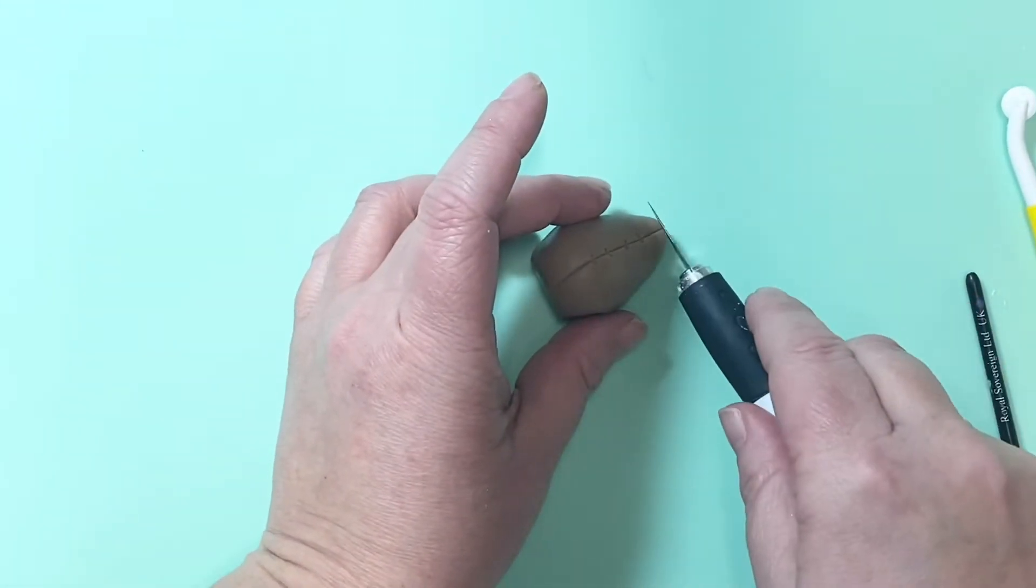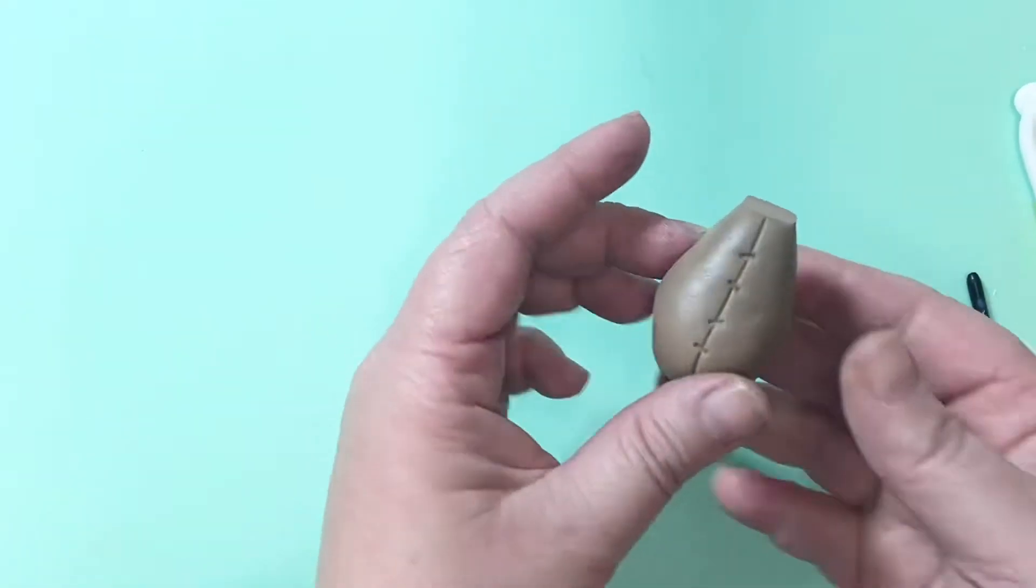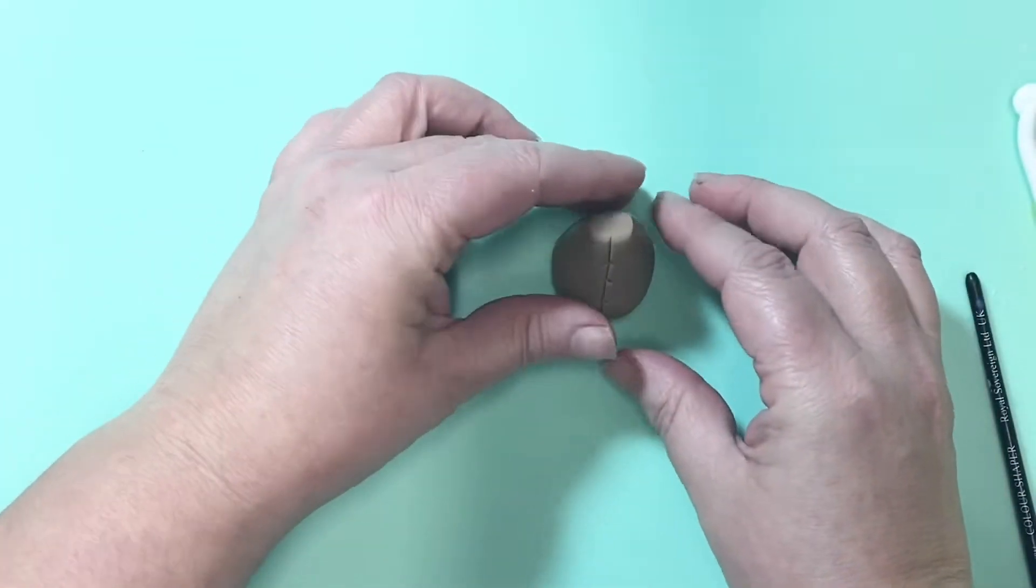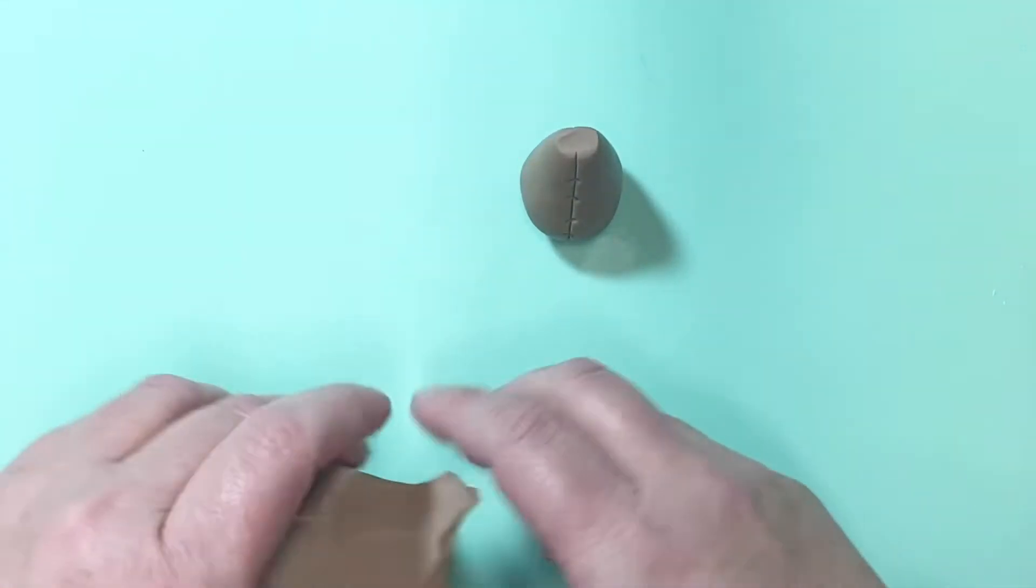Now I cut the top of the teardrop shape off. This is where your bear's head is going to sit and I prefer the head to sit flush on top of the bear's body. If you leave it at the point it kind of wobbles on the top.